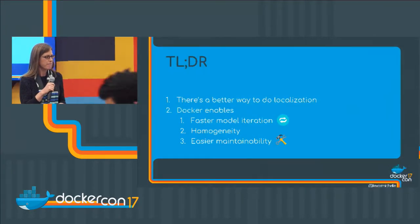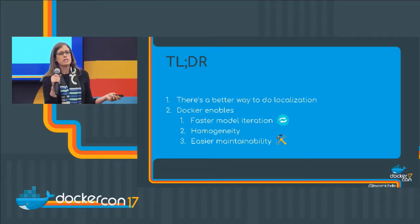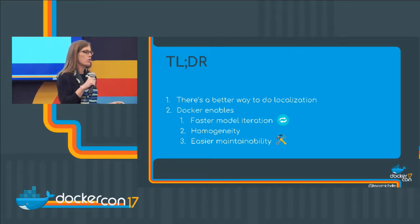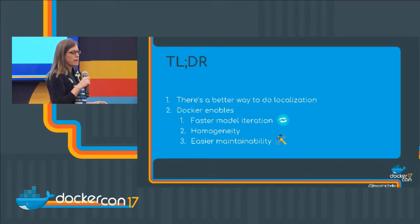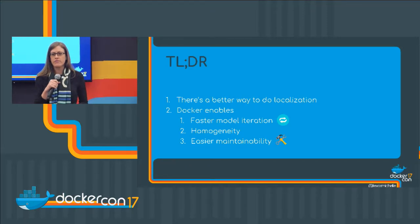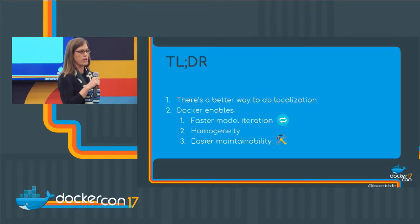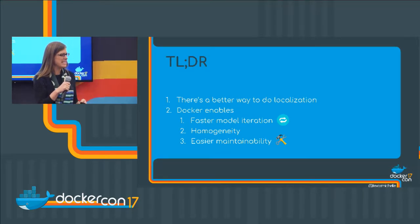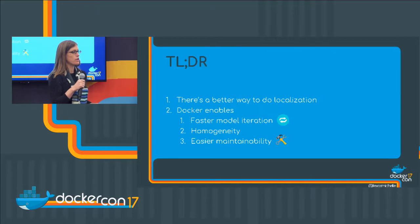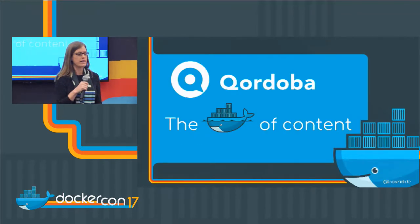So that's what we're going to talk about today. The main point is just to talk about how there's a more efficient way to do localization and how Docker enables that. NLP models are really famous for being notoriously hard to operationalize, to run in production, to support, to really operate in an efficient way. And Docker enables so much of that. So we'll talk about what the problem is and how Docker makes that better.